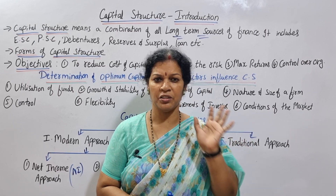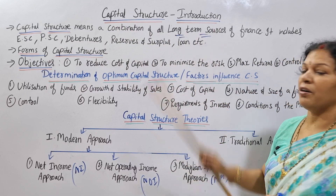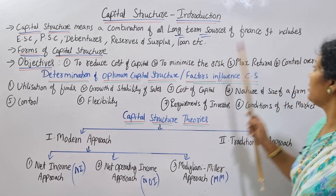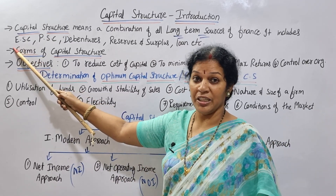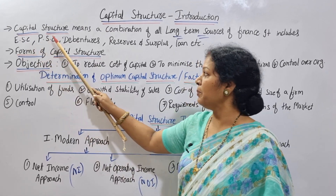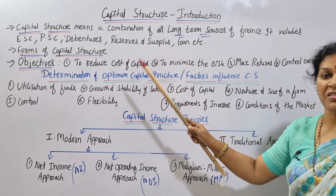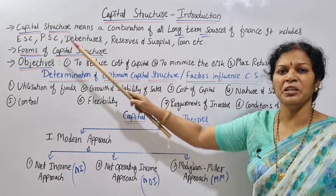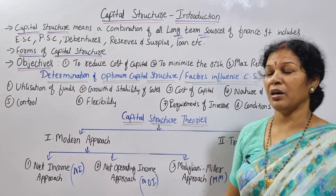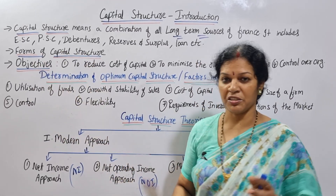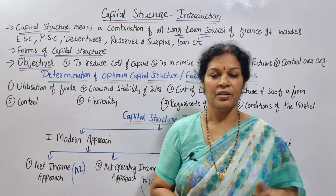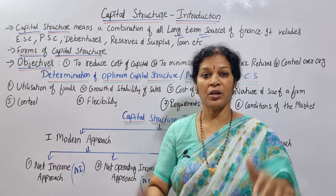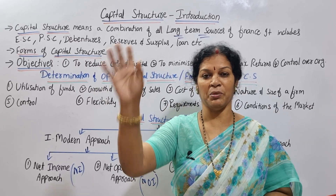Capital structure means combination of all long-term sources of finance. Long-term finance includes equity share capital, preference share capital, debentures, reserves and surplus, and long-term loans. The combination of all these long-term sources is what we call capital structure. A company may issue only preference shares, only equity shares, or a mix of preference shares, equity shares, and debentures.